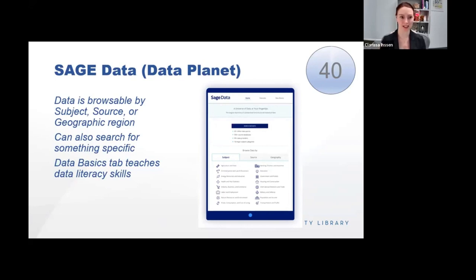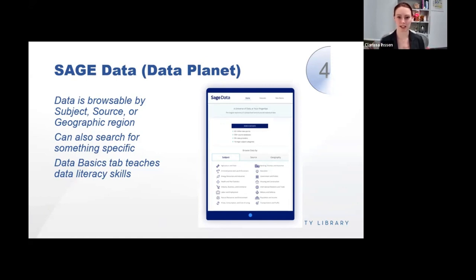Sage Data, formerly called Data Planet, includes a lot of numbers in a fun and easy way to find and play with them. It has access to 550-plus U.S. and international data databases through one platform. Data can be downloaded, or you can create custom visualizations — more maps or trend charts. There's also a data basics tab that explains topics of data literacy including searching, using, and interpreting data. You can search by subject, source, or location, or use a search bar for something specific. This is a really cool tool to find all kinds of data.